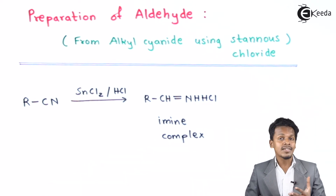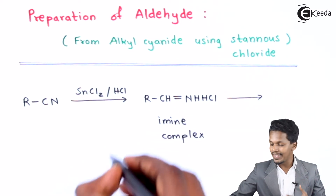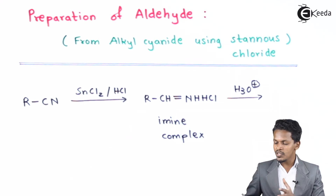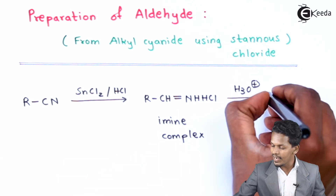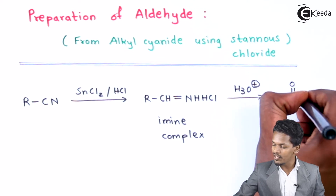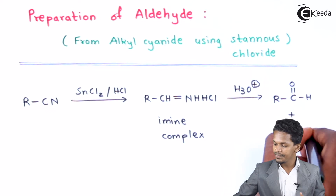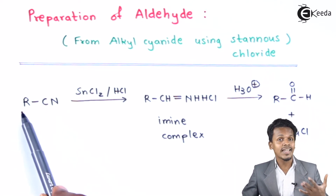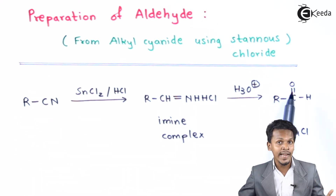But this reaction doesn't stop here. Obviously we have to react it with an acid hydrolysis process. So in this process the imine complex is converted into an aldehyde, that is R-CHO, along with a by-product that is NH₄Cl. This is how an alkyl cyanide is converted into an aldehyde.